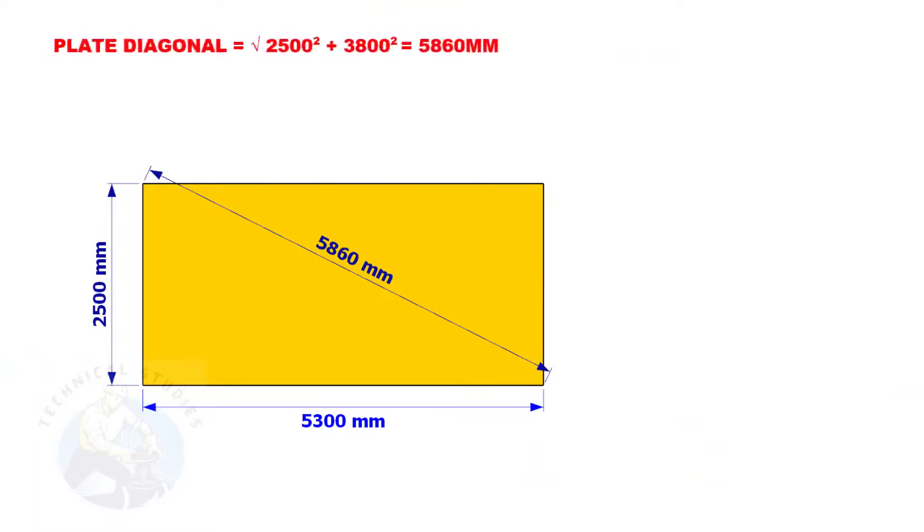Since the size of the plate we are going to mark is 2500 millimeters by 5300 millimeters, let us calculate the diagonal of the plate.